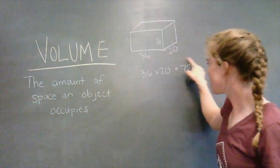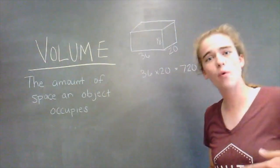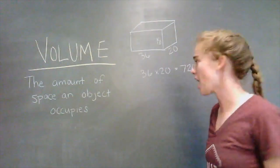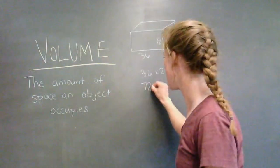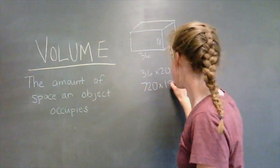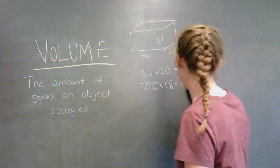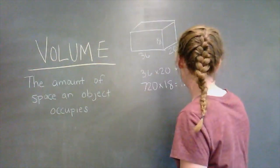So now we have 720 cubes on one floor, but now we're going to build it up 18 times. So we're going to take 720 times 18, and that's going to end up equaling 12,960.